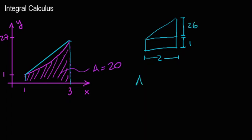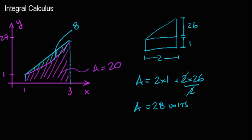So we calculate the area of a rectangle 2 times 1 plus the area of this triangle, 2 times 26 divided by 2. We would get our area to be 28 units. So that means this portion is 8 units. Since we have calculated everything to be 28 and this portion down here is 20.